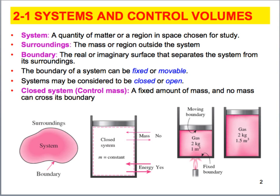Now we can make rules for this boundary. It can be fixed or it can move. It can be closed or it can be open. Closed means that the mass is fixed. Open means that mass can pass in and out of the boundary.